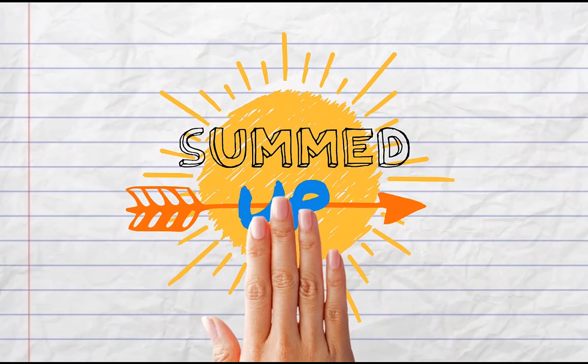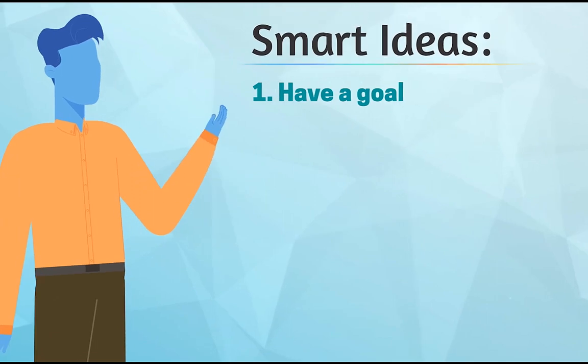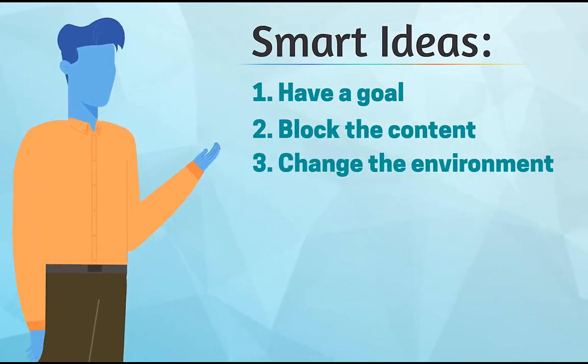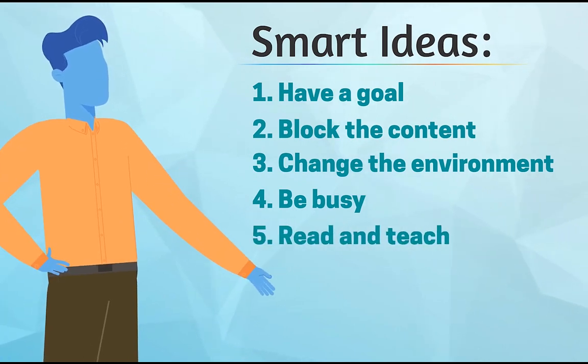So now, let's sum up all the smart ideas once. Number one, have a goal. Number two, block the content. Number three, change the environment. Number four, be busy. And number five, read and teach.